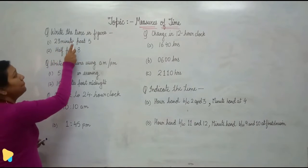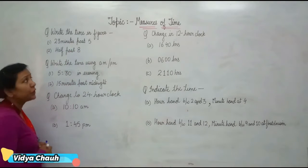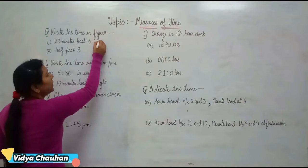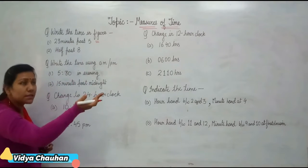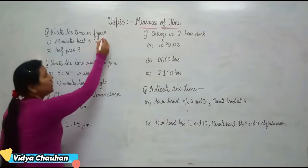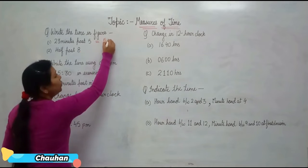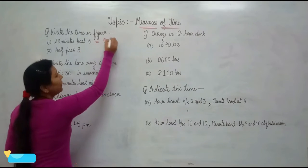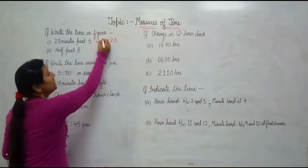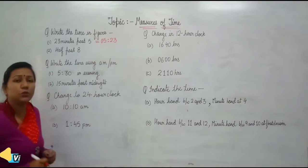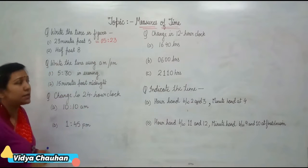So the first part: 23 minutes past 5. The time will be — 23 minutes is already past, and past after 5. So your time will be 5:23. Or you can write 05:23. So this is your time, 23 minutes past 5.